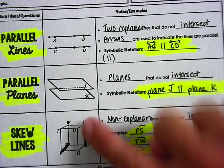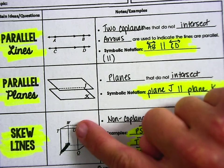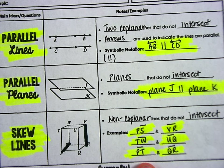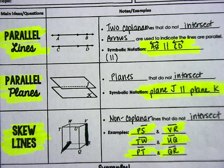TW is coming out towards us right there. UQ is going up and down in the front. So skew lines, they don't intersect because they're in separate planes, and then there's your third example right there. Okay, so add this parallel lines, parallel planes, skew lines.